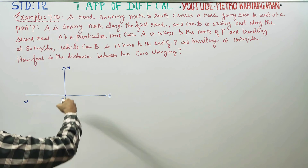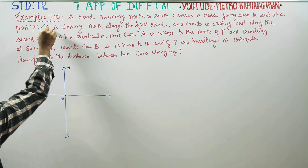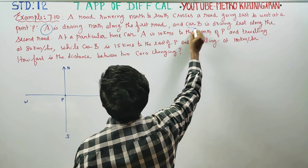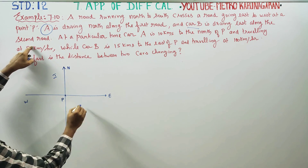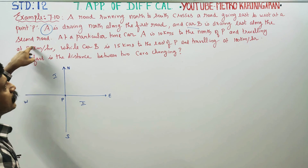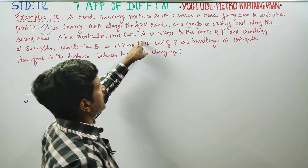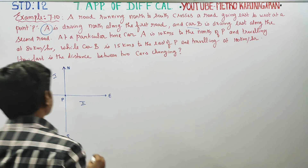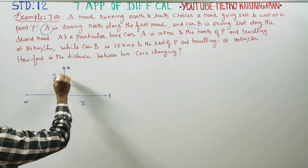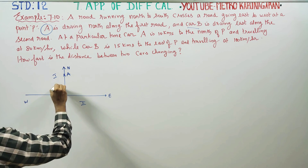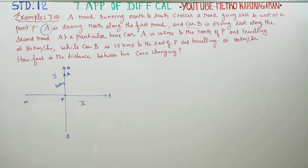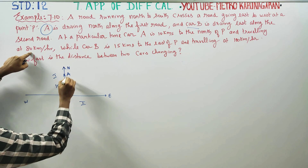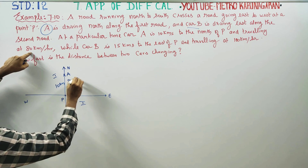Car A is driving north. This is my first road and this is my second road. At a particular point, car A is 10 kilometers to the north of P, traveling at 80 kilometers per hour.